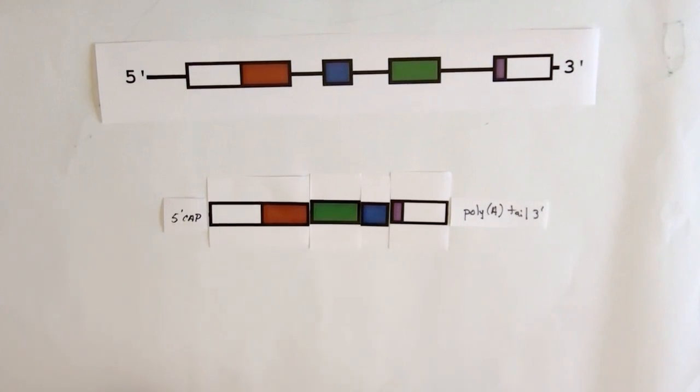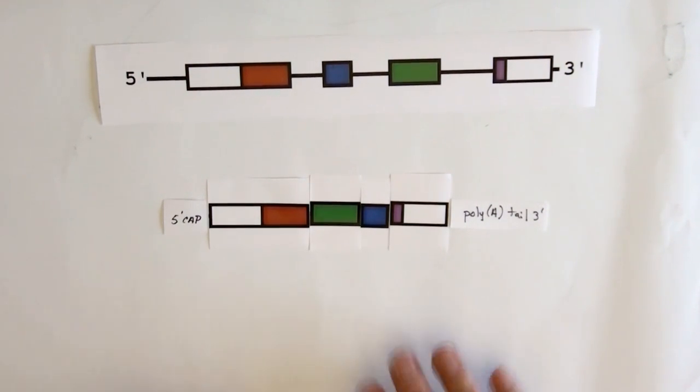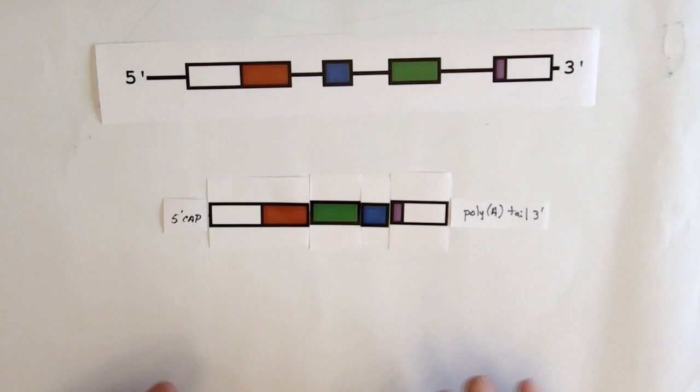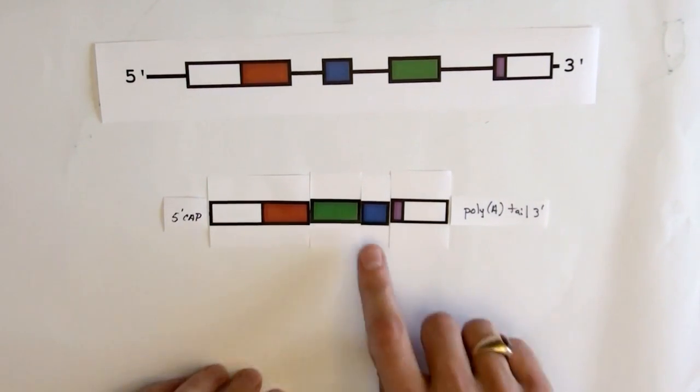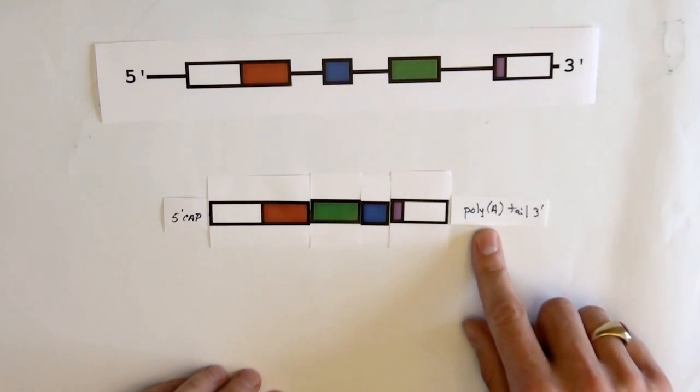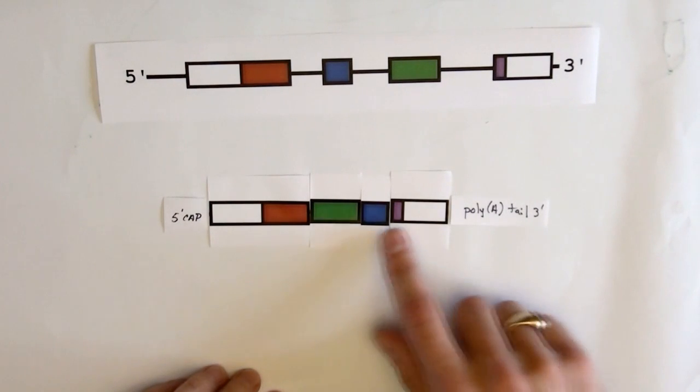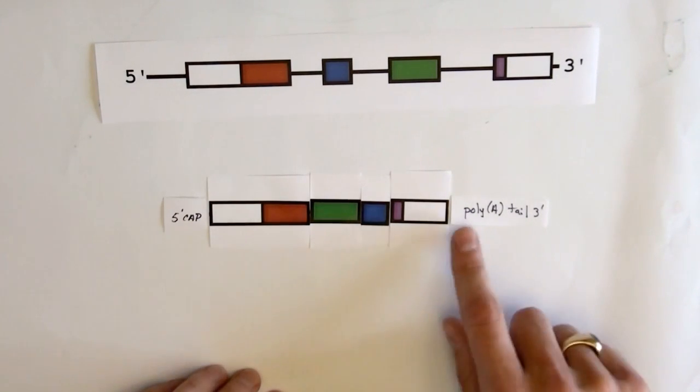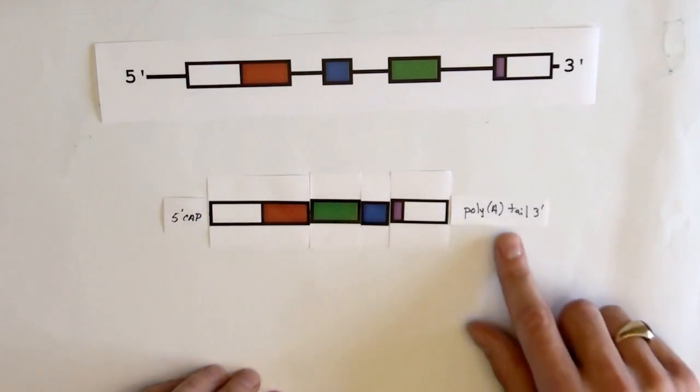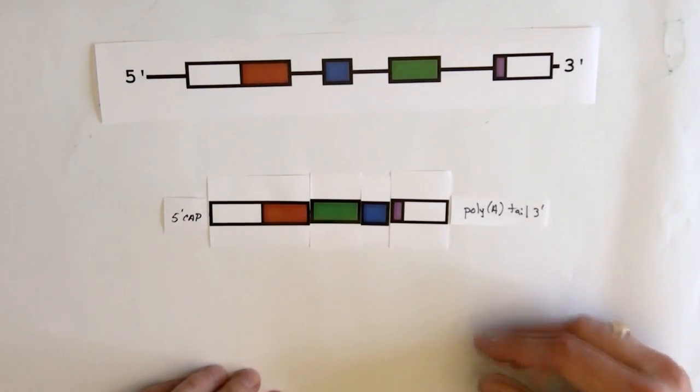This is where the poly-A tail can come into use. You can purify RNA from cells and enrich your sample for mRNA. You can take a column or bind a poly-T sequence to a resin or beads, and when you run your sample through, your mRNA with the poly-A tails will stick to the resin. You can then elute that poly-A off the beads and elute your mRNA into a tube.